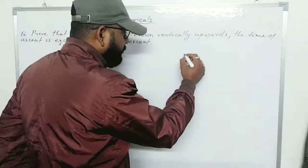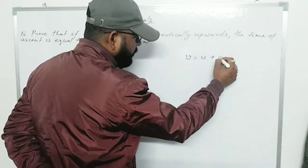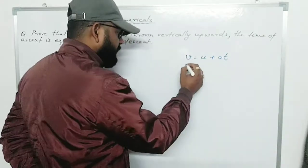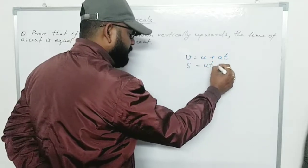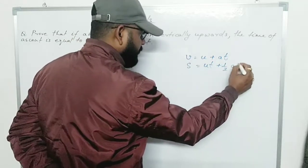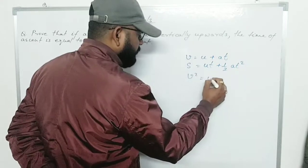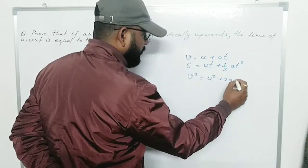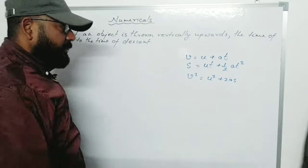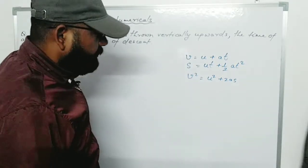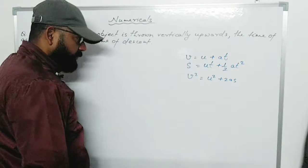The three equations of motion are: V = U + AT; S = UT + ½AT²; and V² = U² + 2AS. I already proved these three formulas in the previous chapter on motion.